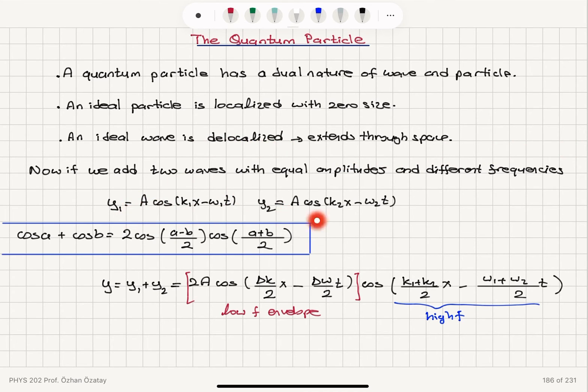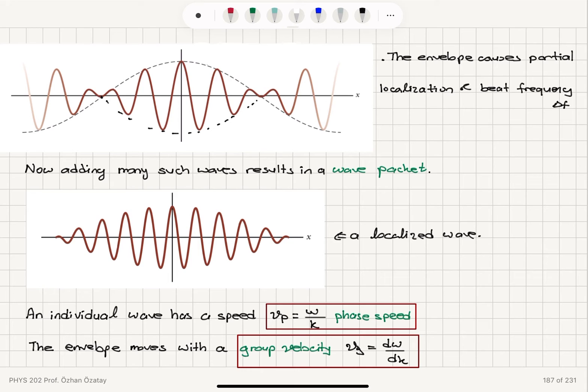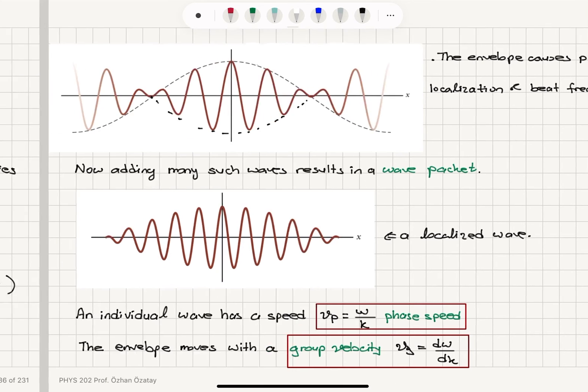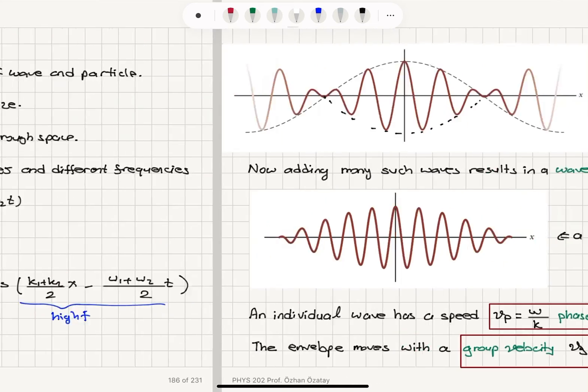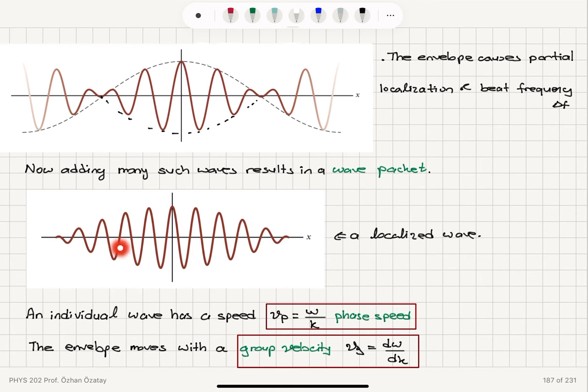If you consider two traveling waves and add them up, you immediately see partial localization. By adding several waves, we can obtain a localized wave, which represents the particle.